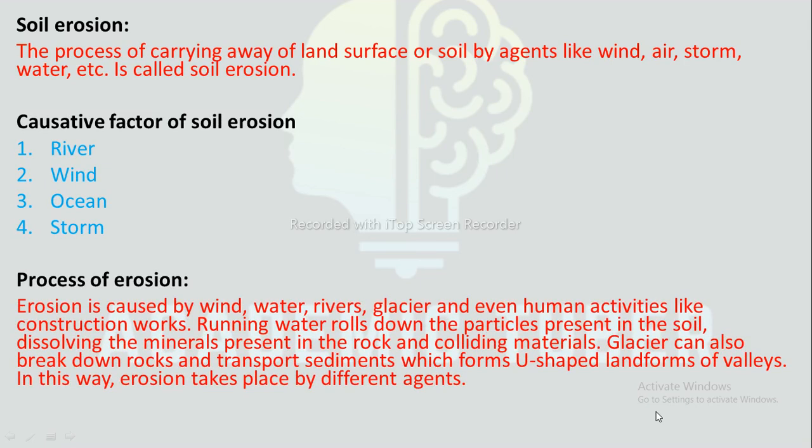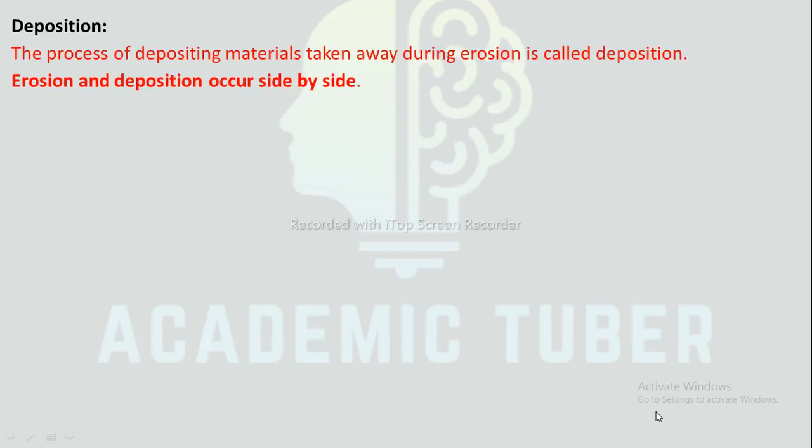Agents of erosion: Erosion is caused by winds, water, rivers, glaciers, and even human activities like construction. Running water washes down the particles present in soil, dissolving the minerals present in rocks. Glaciers can also break down rocks and transfer sediments, forming U-shaped valley landforms. In this way, erosion takes place by different agents.